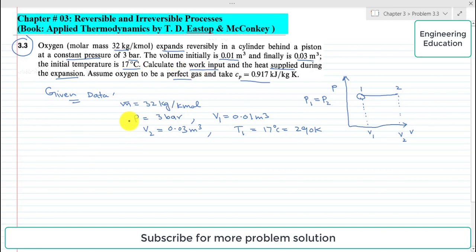We are required to find the work input and heat supplied while taking Cp is equal to 0.917 kJ per kg per kelvin. In this problem, two things are required to find: first, work input and second is the heat supplied during expansion, that is Q.